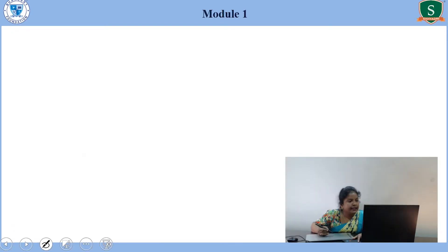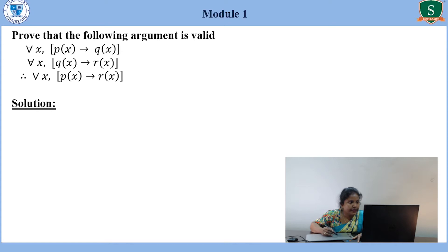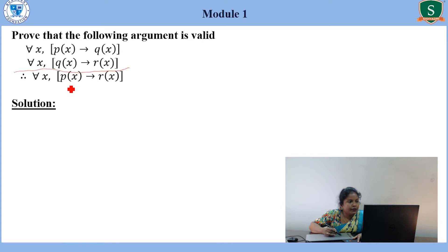The next problem: prove that the following argument is valid. For all X, P(X) → Q(X). For all X, Q(X) → R(X). Therefore, for all X, P(X) → R(X).